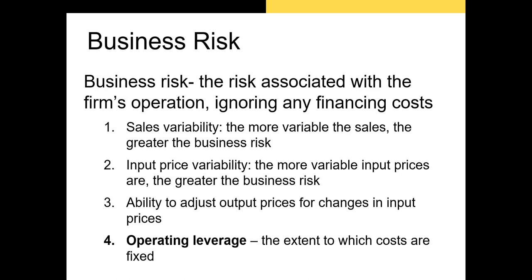Whether or not the firm can pass costs on to consumers is the third major factor in business risk. If a firm is in a less competitive industry with product differentiation, it may be easier to raise prices. However, in industries like fast food or grocery, raising prices risks losing customers to competitors. The ability to adjust output prices for changes in input prices is that third key factor.